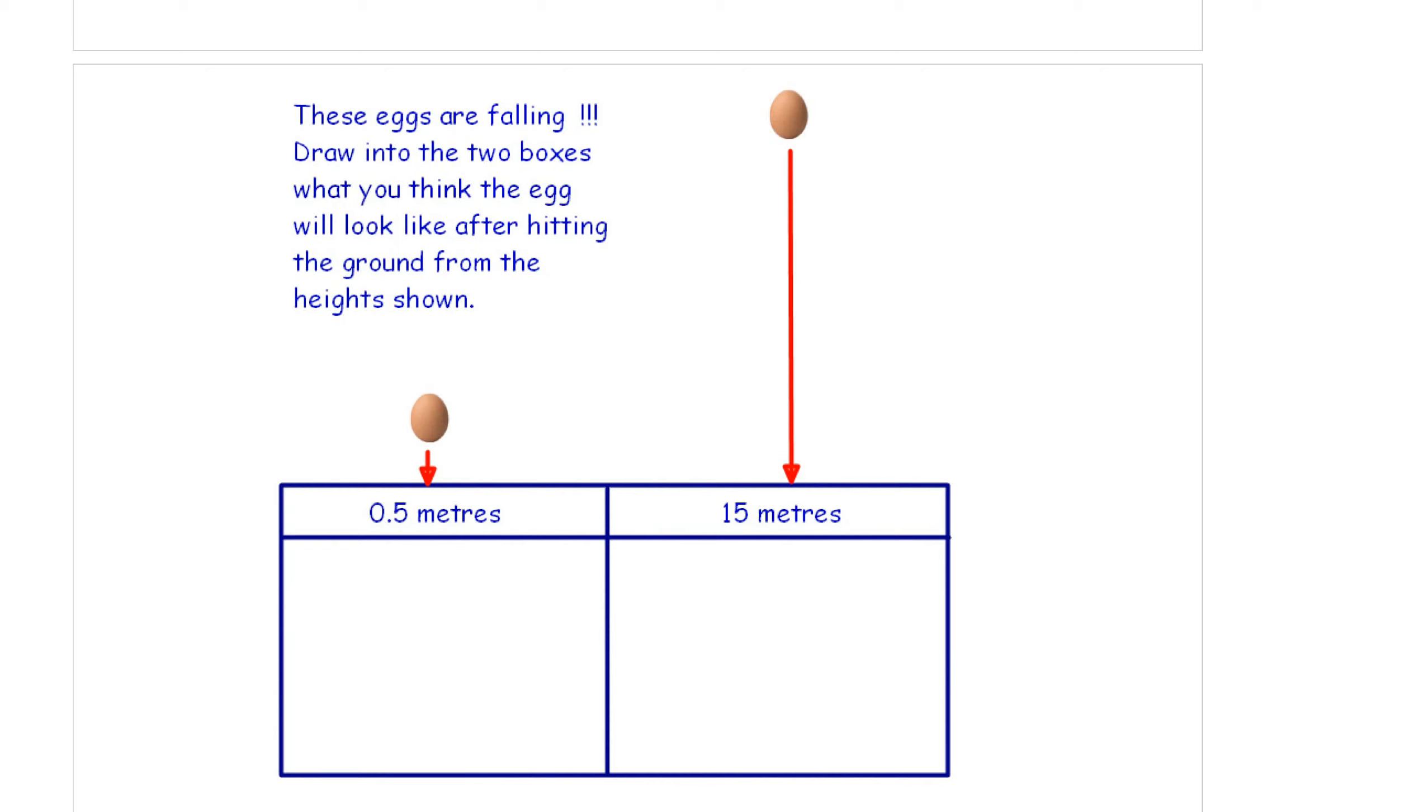These eggs are falling. Draw into the two boxes what you think the fresh eggs will look like after hitting the ground from the height shown. You can see egg number one has been dropped only from 0.5 meters. That's 50 centimeters. You get to draw in what you think the egg will look like once it's hit the ground. Egg number two has been released from 15 meters. I'll give you a hint. Egg one is going to look more like an egg than egg two.